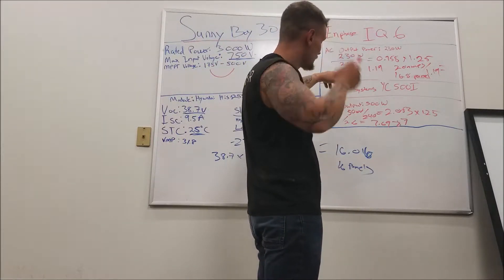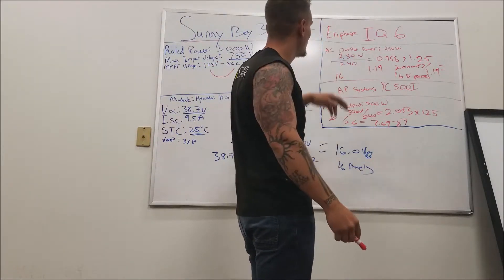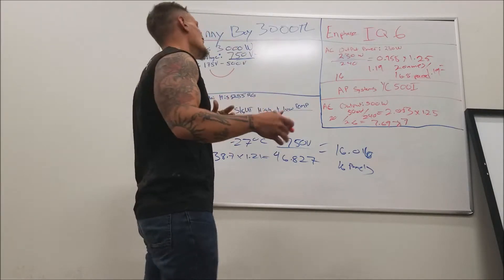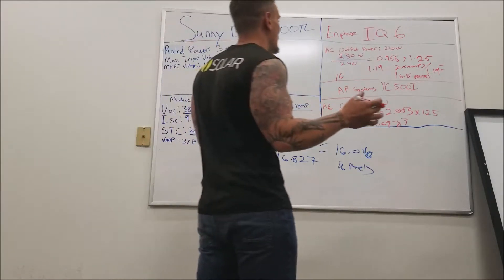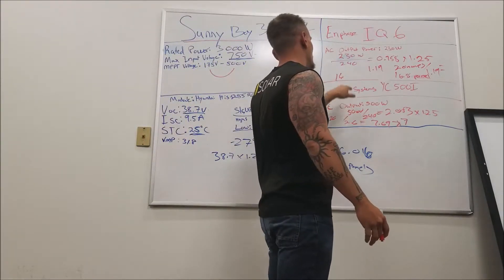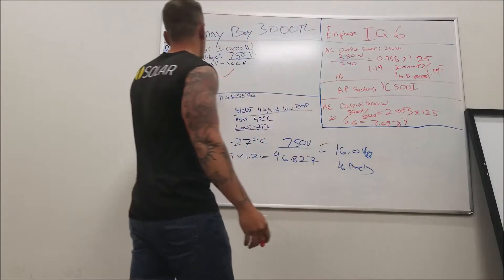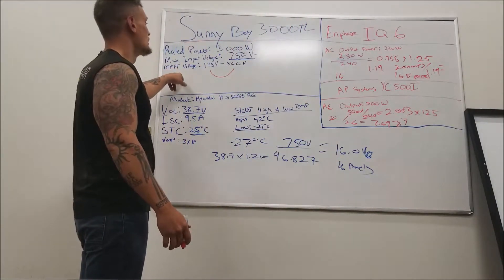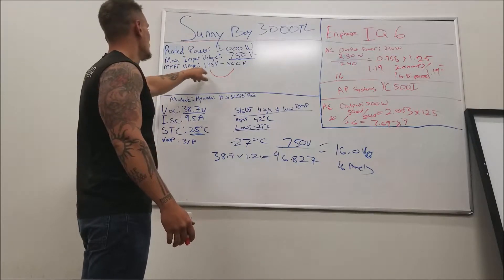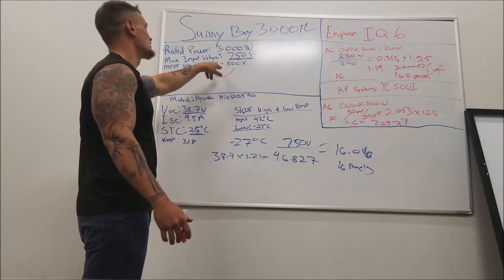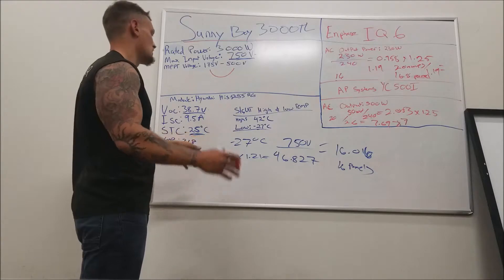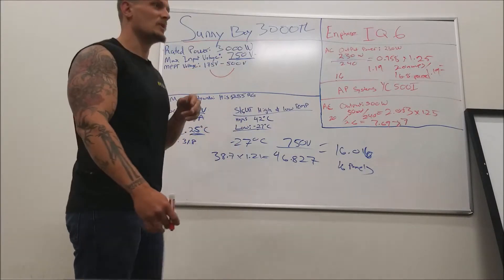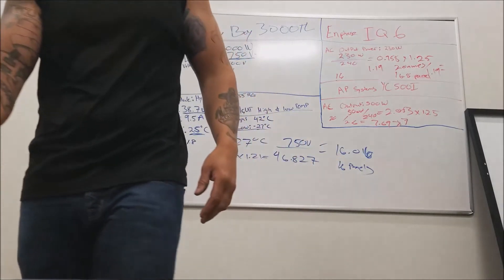With the two microinverter types we're looking at, the maximum power point tracking happens at the panel level, so it's not going to change with how many panels you have on a branch circuit. With the Sunny Boy string inverter, the maximum power point tracking is at the string level, so that is going to change — your voltage is going to change, affecting how many panels you can put on and stay in range.